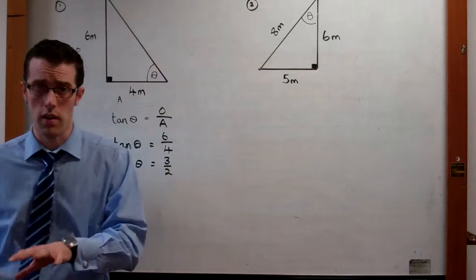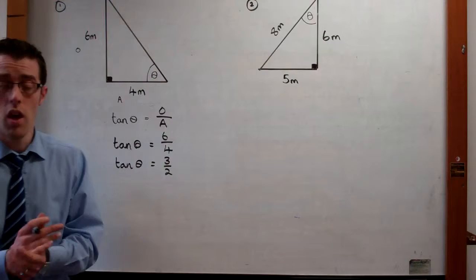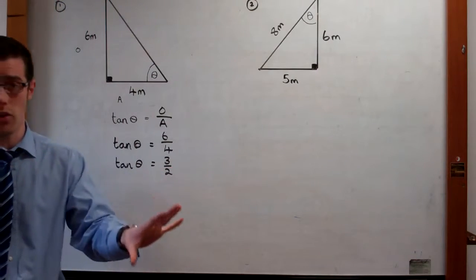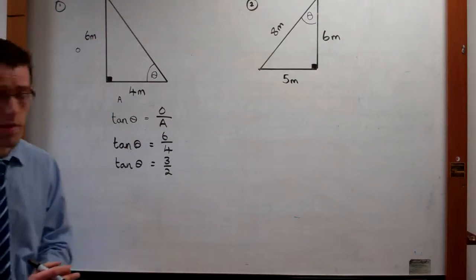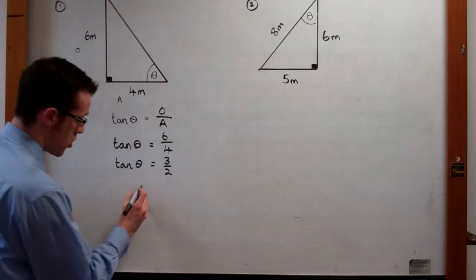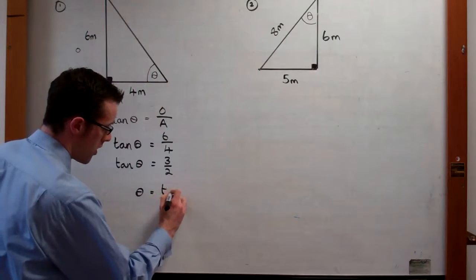Now, in order to find out the angle, you're going to have to use the shift button on your calculator, which you've not used before. At the end of this video there's going to be a demo on how to use the shift button for this calculation. So if you press shift tan and then put in 3 over 2, this will appear.